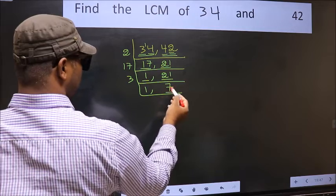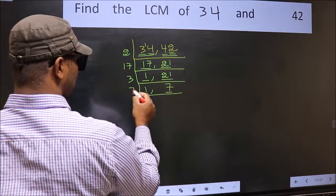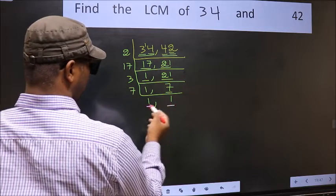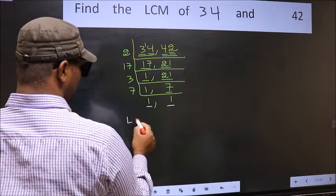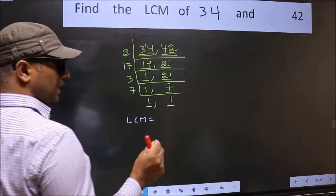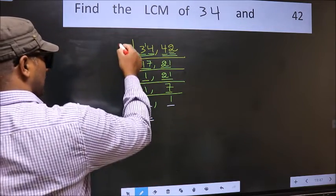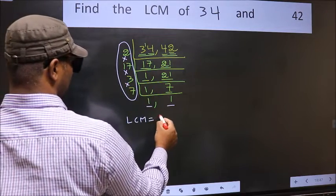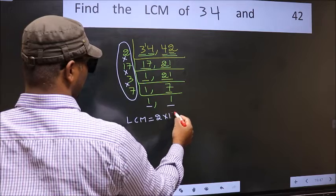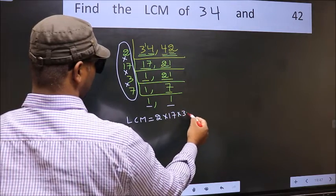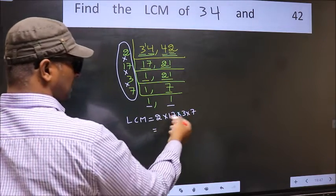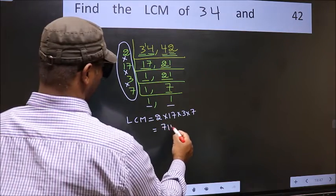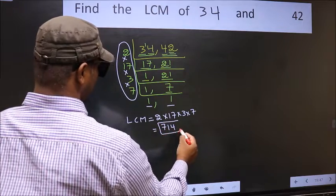Now we have 7. 7 is a prime number, so 7 1s 7. So we got 1 in both the places. So our LCM is the product of these numbers. That is 2 into 17 into 3 into 7. When we multiply these numbers, we get 714 is our LCM.